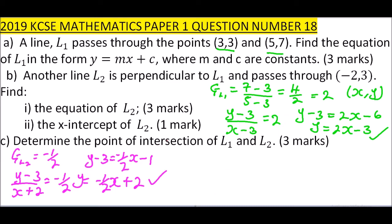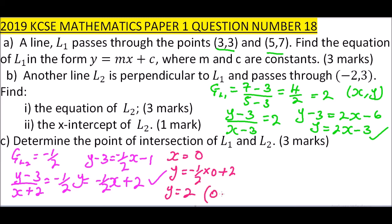Part ii: we are told to find the x-intercept. The x-intercept is where line L2 cuts the x-axis, so at y = 0, we find the value of x. Setting y = 0: 0 = −1/2 x + 2, giving x = 4. Wait — the speaker sets x = 0 to find y: y = −1/2(0) + 2 = 2. The coordinate is (0, 2).